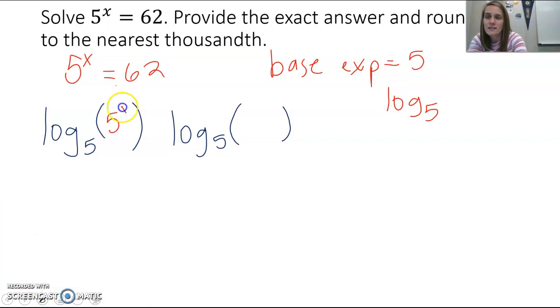So 5 to the x goes inside the one logarithm, and 62 goes inside the other one. So it's log base 5 of 5 to the x equals log base 5 of 62.